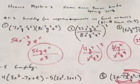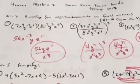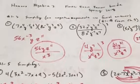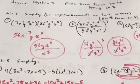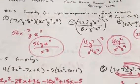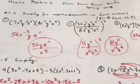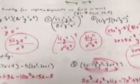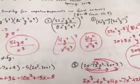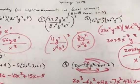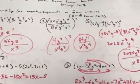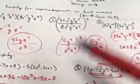Here are the answers to your first page. Number one: just multiply the seven and eight together. Remember, when you multiply with the same base you add the exponents. If you get a negative exponent, it goes in the denominator. For number two, do 32 divided by 8 first.